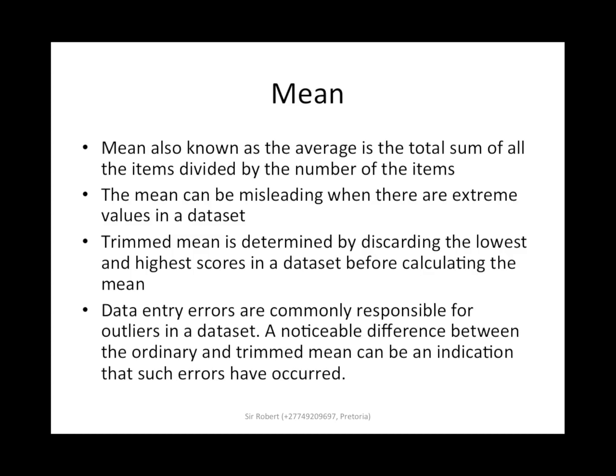So we start with the mean. Mean, also known as the average, is the total sum of all the items divided by the number of items. The mean can be misleading when there are extreme values in a data set. Trimmed mean is determined by discarding the lowest and highest scores in a data set before calculating the mean.